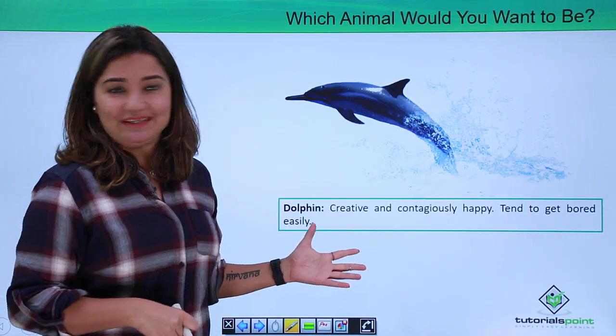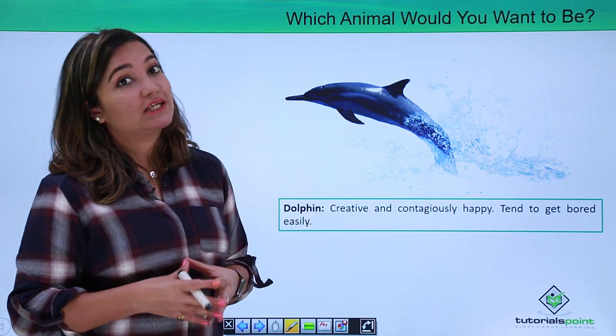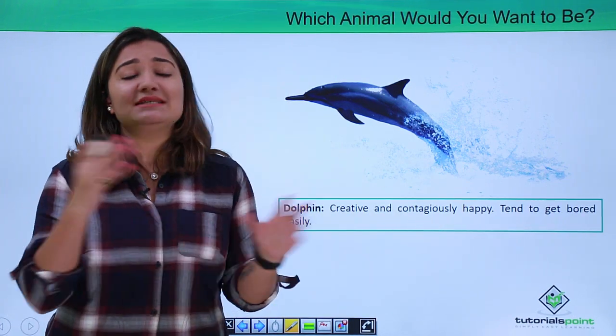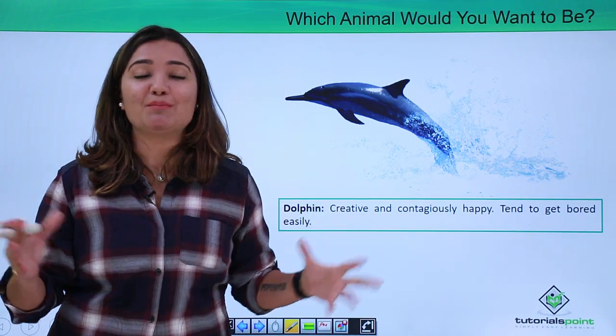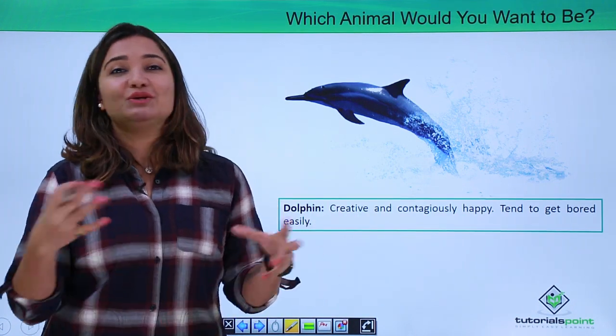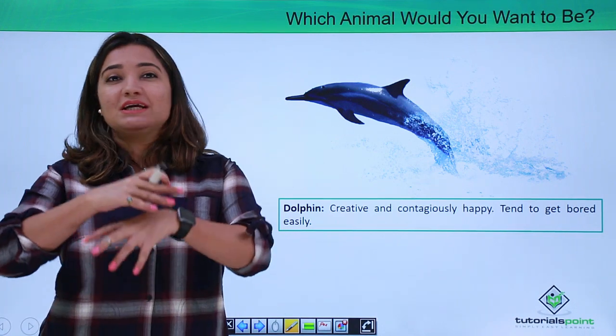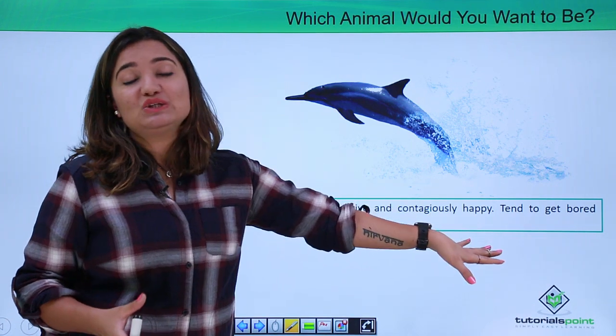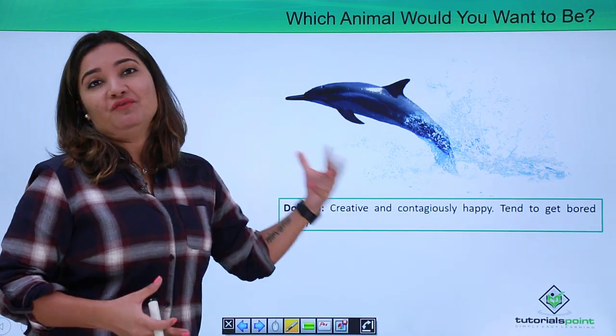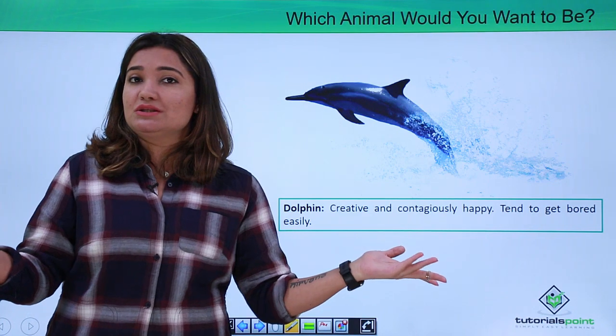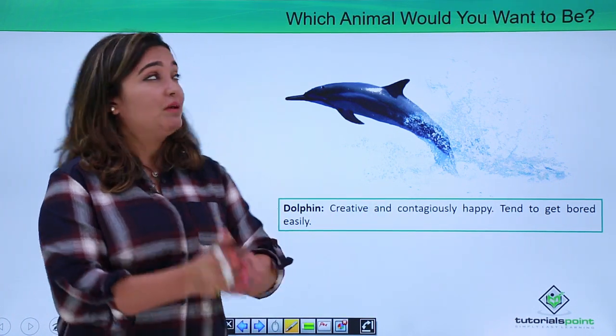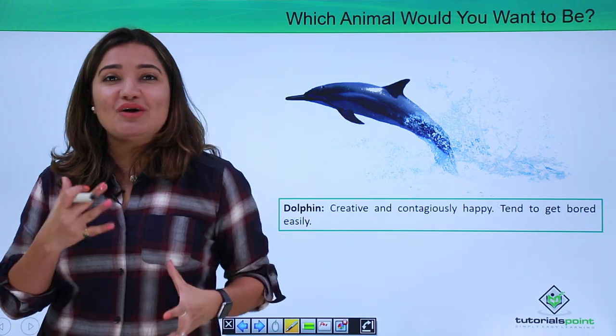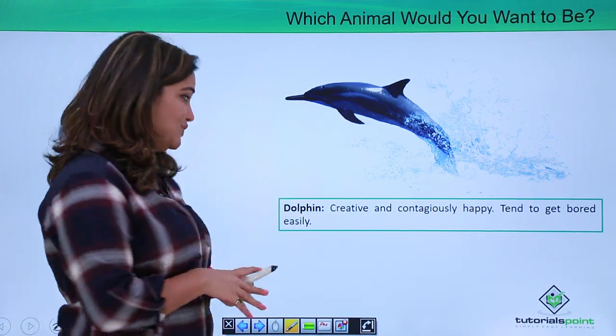How about a dolphin? Dolphin is a very attractive choice. Creative and contagiously happy, yes that is very right. They are very happy, full of life, enthusiastic people who just create a lot of energy wherever they go. They tend to get bored with the same kind of work time and again. If you choose dolphin for your answer, just be prepared that there's going to be a constant change in the kind of work that you do.